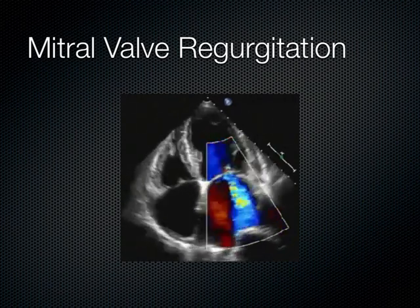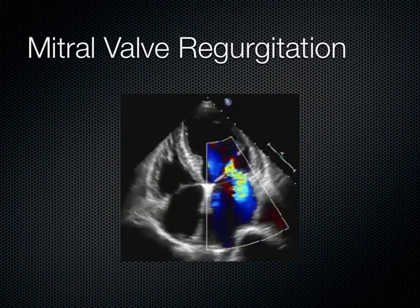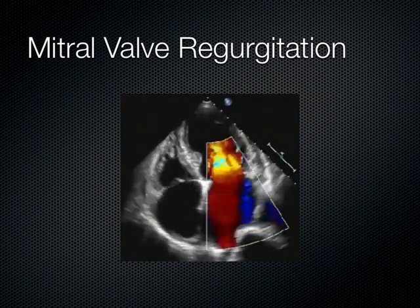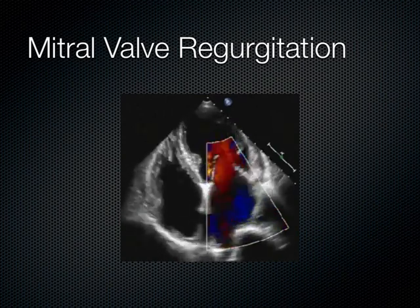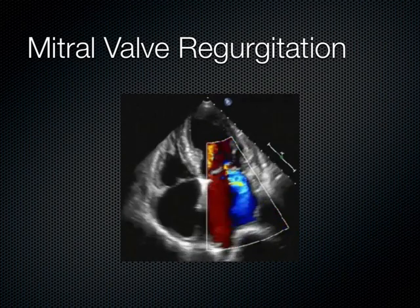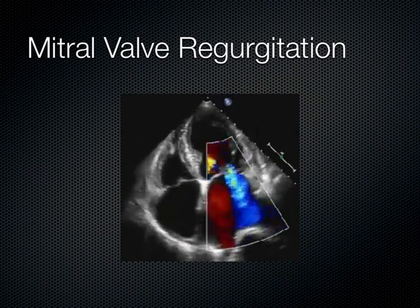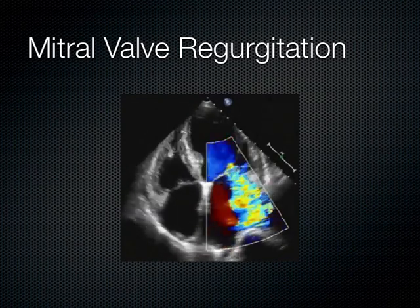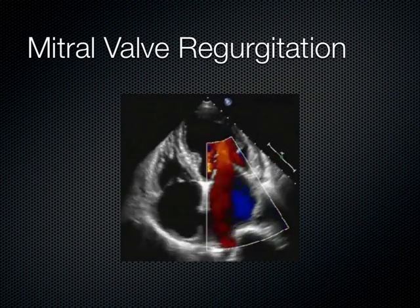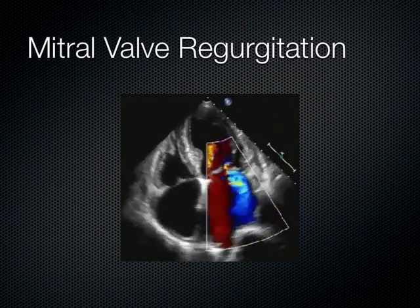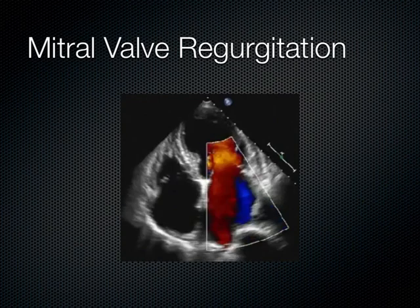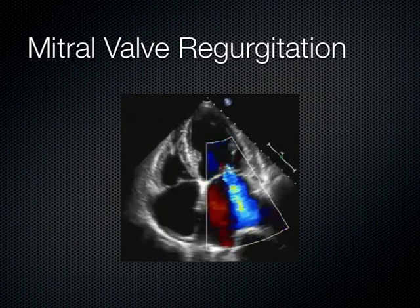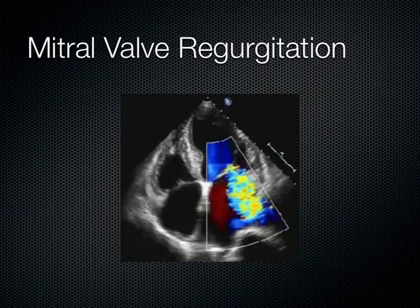We do this in the apical 4, not the parasternal long, because when you work with Doppler, you don't want the Doppler to be at a 90-degree angle with the angle of incidence. In the parasternal long axis, when you look at the mitral valve, you're at about 90 degrees, whereas in the apical 4 chamber view you're closer to parallel — the sound is more parallel with the flow of the blood, closer to an angle of maybe 60 degrees. The more parallel you get, the better Doppler works.